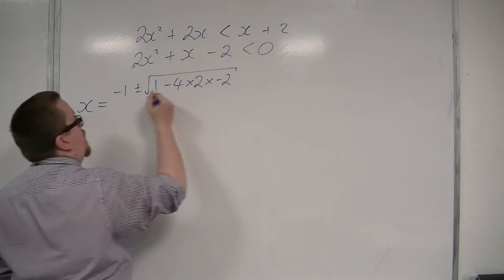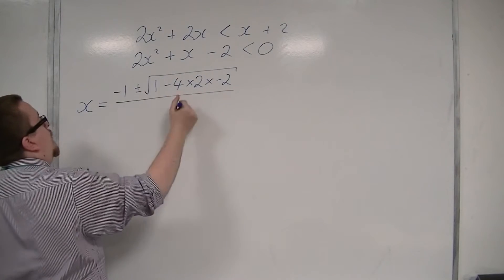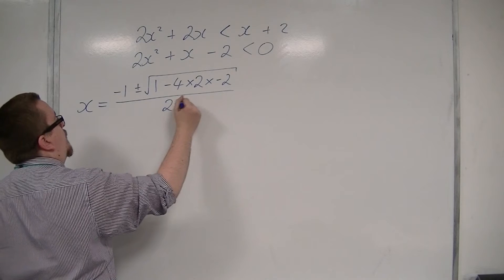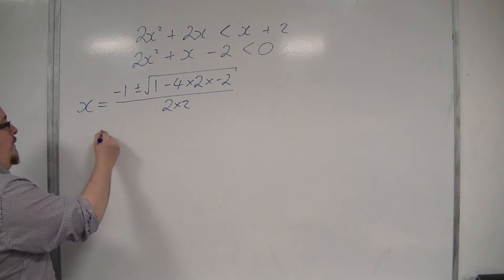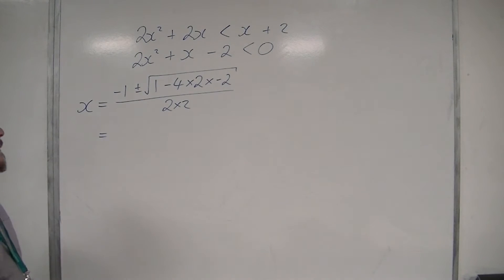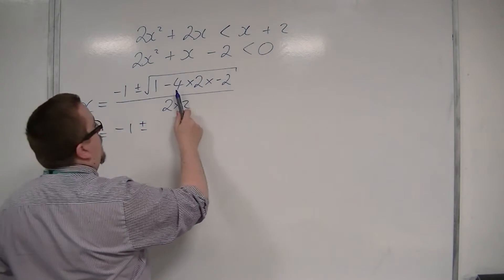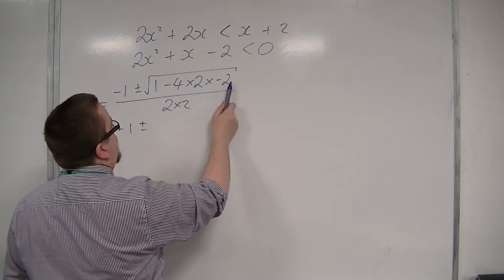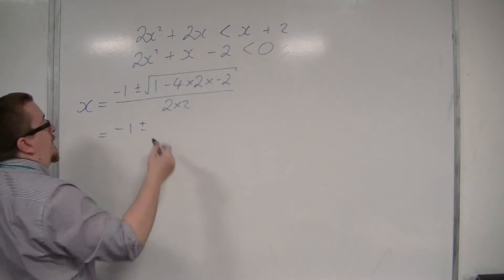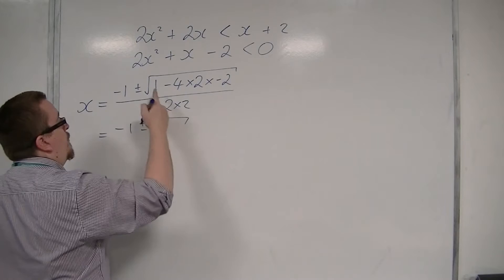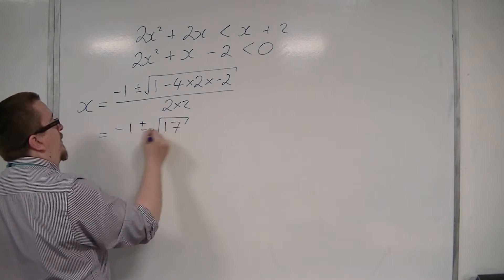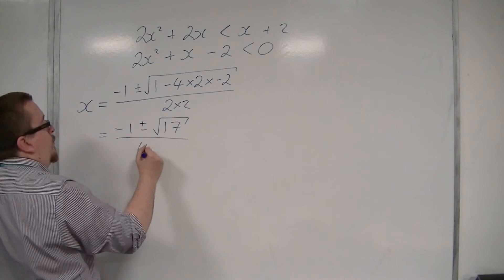So we have minus 1 plus or minus. Here we've got 4 times 2, that's 8, times 2 is 16. Two minuses make a plus, so we have the square root of 1 plus 16, so √17, all over 4.